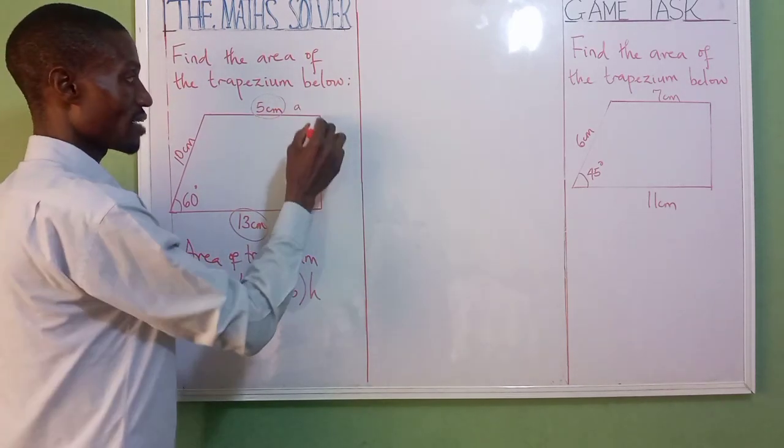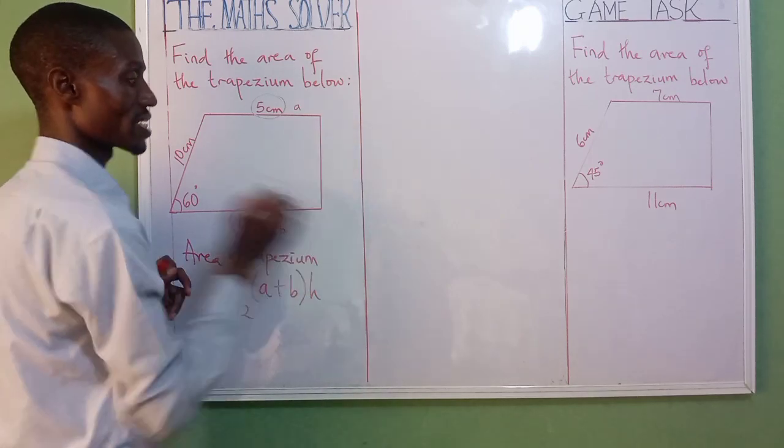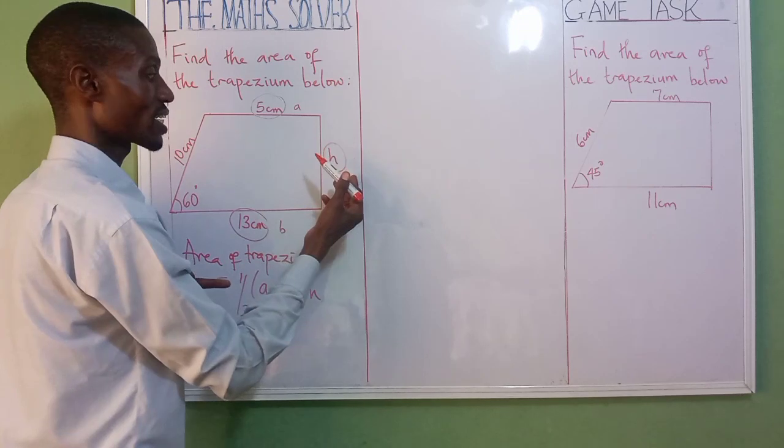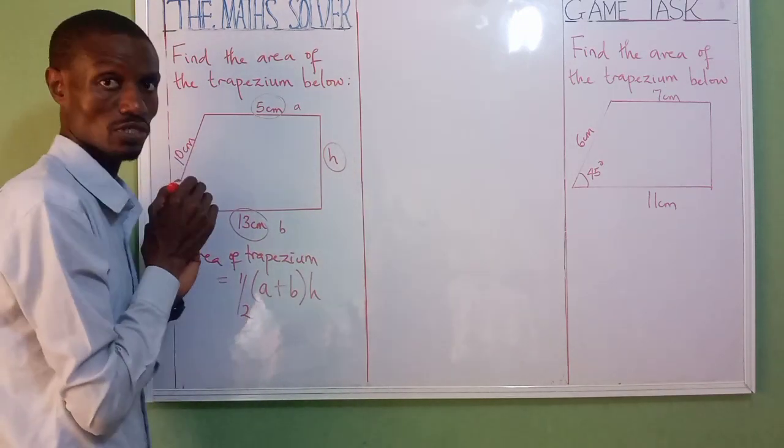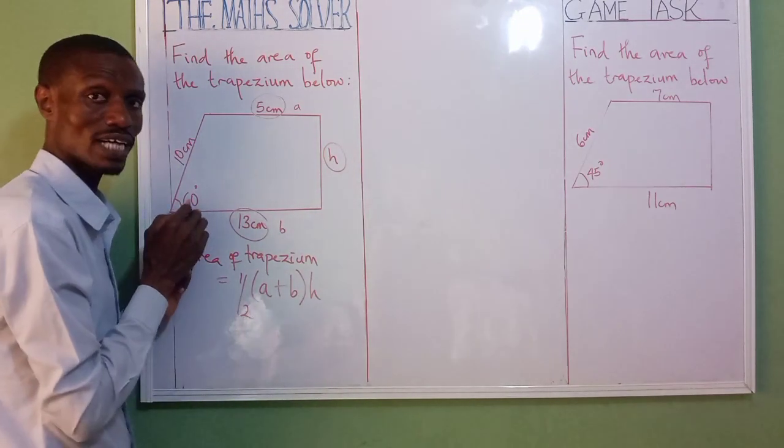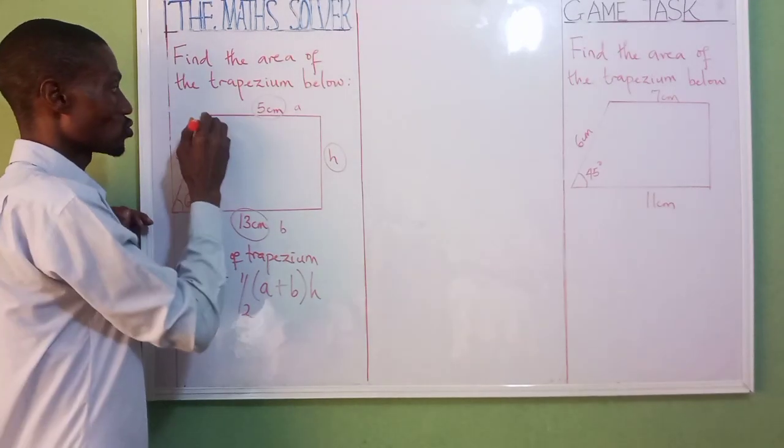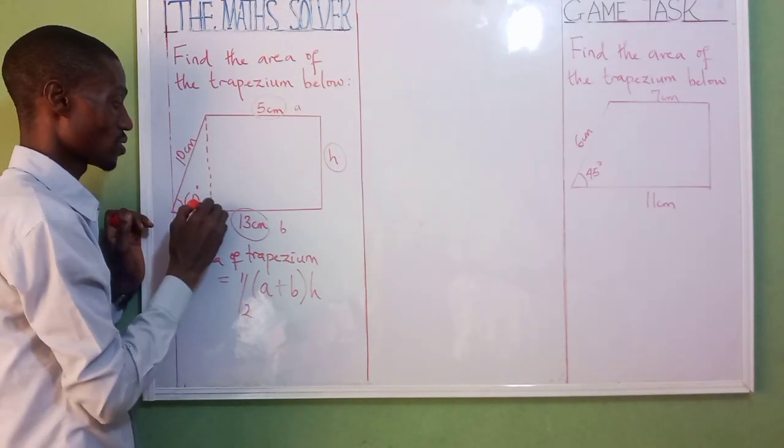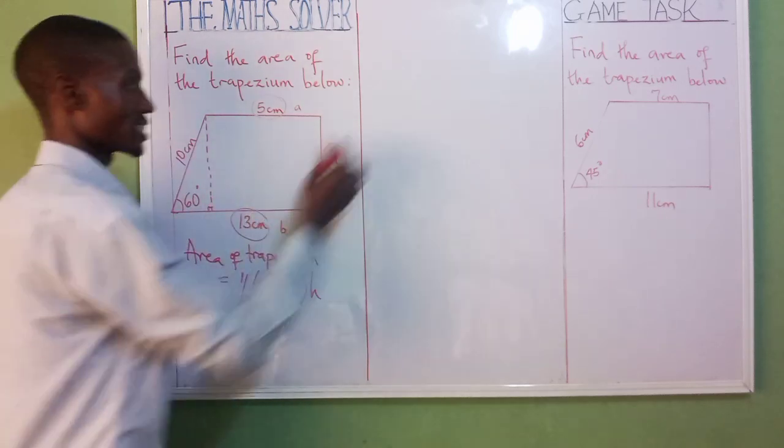Now this is our height. As you can see, our height is not given here, so the first thing you have to do is to calculate our height. How do we calculate it? We calculate it from this. That's the essence of why we have this angle. So the first thing you have to do: trace this one down. Because this is our height, let's bring it out.